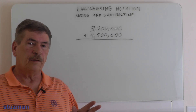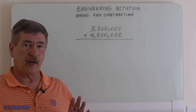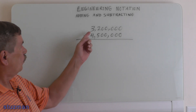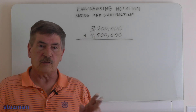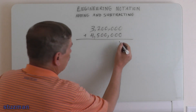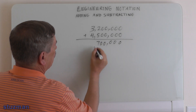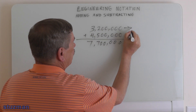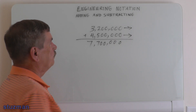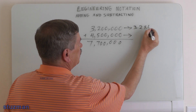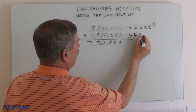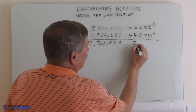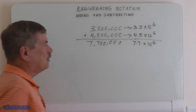Let me show you how engineering notation can simplify addition. Take 3,200,000 added to 4,500,000. Done the old-fashioned way, you get 7,700,000. Now convert directly to engineering notation: 3,200,000 becomes 3.2 times 10 to the 6, and 4,500,000 becomes 4.5 times 10 to the 6. Add the mantissas and you get 7.7 times 10 to the 6 — those are equal.